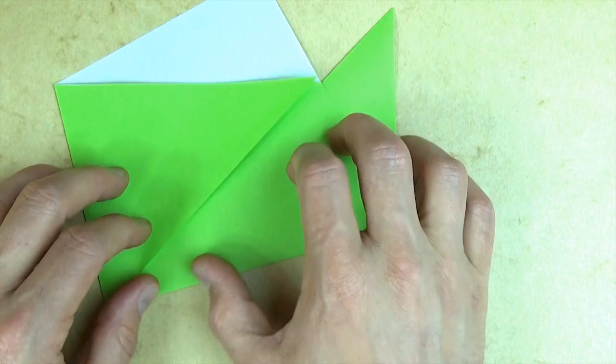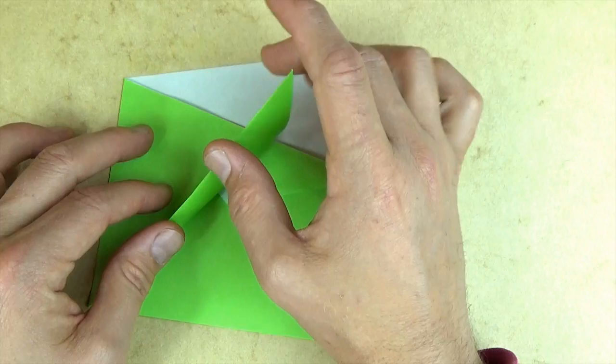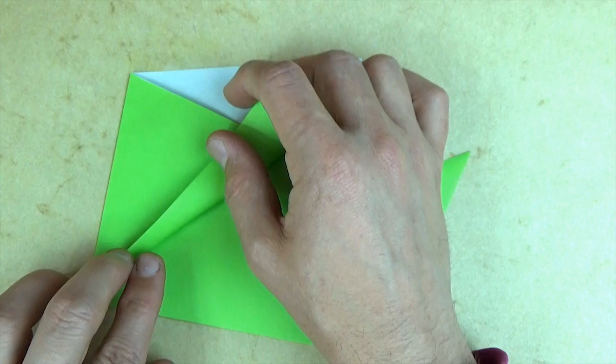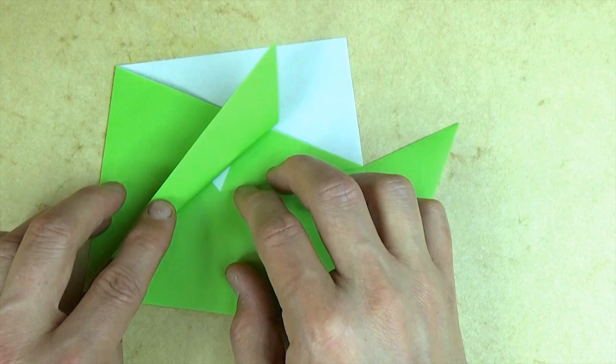And now let's fold this flap up. And we're going to fold it up so that the fold will hit this point. And we want the fold to cover up the white here. So it should hit this point right here.